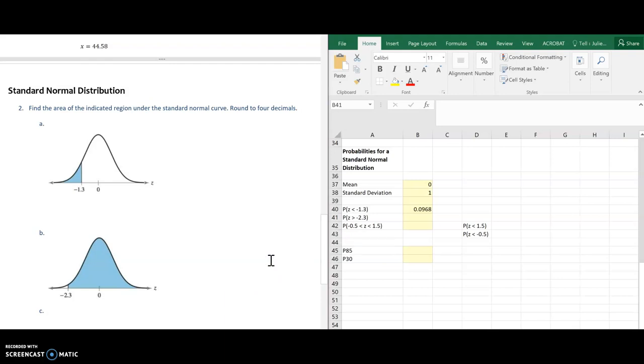Now this one is to the right. So I'm going to have to do like I did before. Insert that 1 minus to give me the area to the right instead of to the left. So 1 minus norm.s.dist. My z score is negative 2.3. And I'm going to choose 1. So this is my probability 0.9893. Most of that curve was shaded, so I expected a value really close to 1 like that.